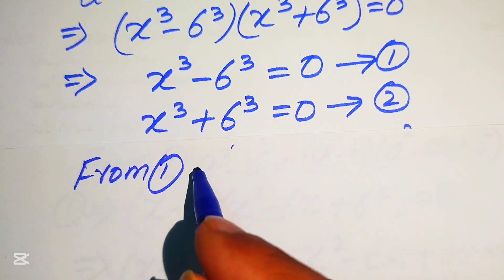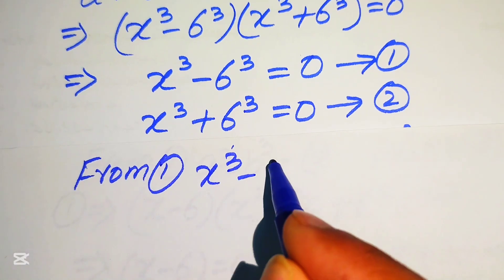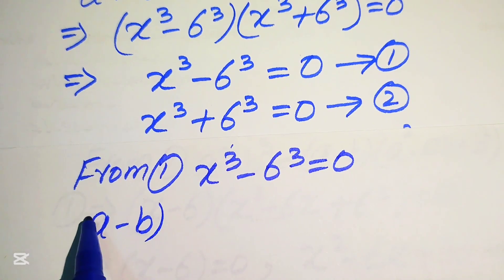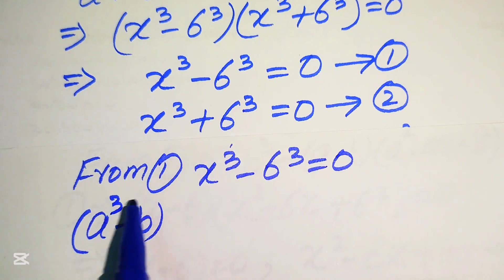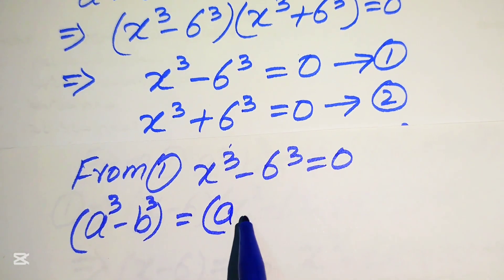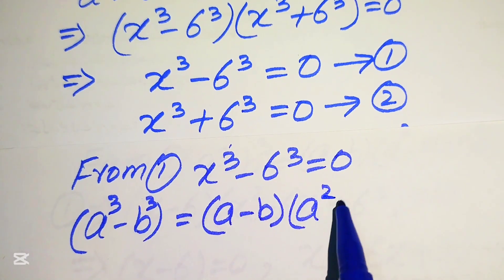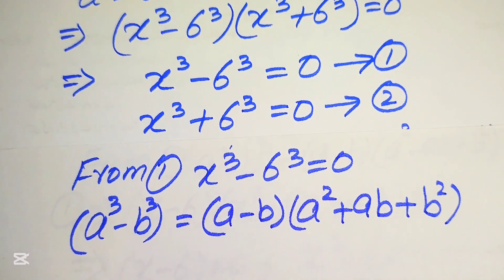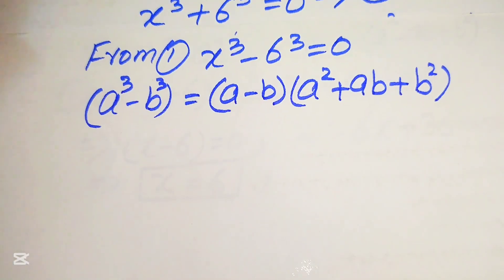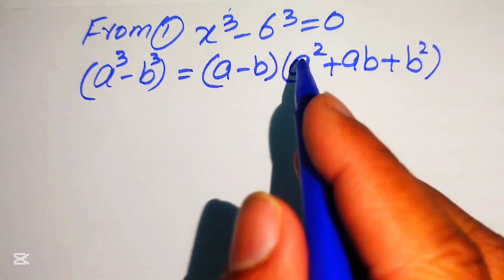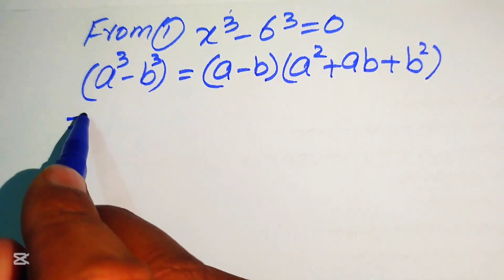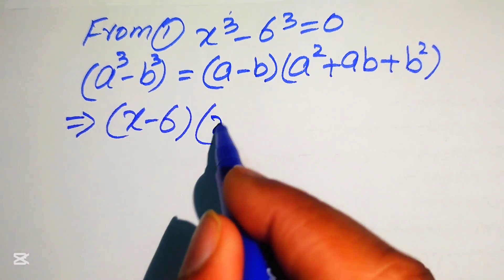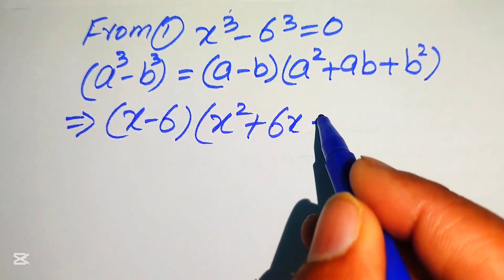For equation 1: x³ − 6³ = 0. We use the cubic formula: a³ − b³ = (a − b)(a² + ab + b²). Substituting, we get (x − 6)(x² + 6x + 6²) = 0.